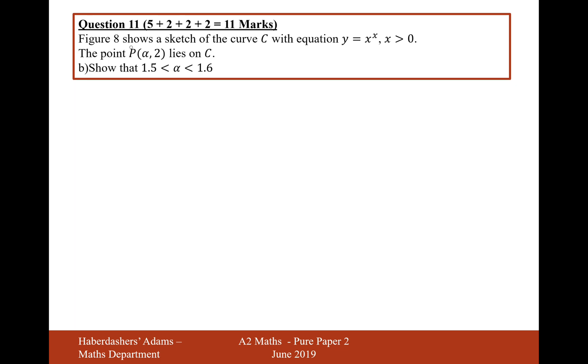Figure 8 shows a sketch of curve C with y equals x to the x. The point alpha 2 lies on C. Show that alpha is a value in between 1.5 to 1.6. Okay, so we're looking to show that when we do f of alpha, we get 2. So that's going to mean x to the x equals 2.